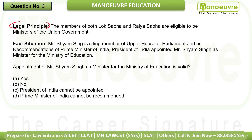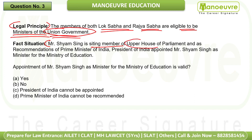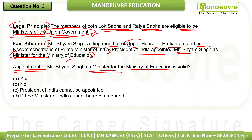Next question. Legal principle: members of both Lok Sabha and Rajya Sabha are eligible to be ministers of the Union Government. Fact situation: Mr. Sham Singh is a sitting member of the Upper House of Parliament, and on the recommendation of the Prime Minister, the President of India appointed him as Minister for the Ministry of Education. The question is whether this appointment is valid. Since the principle refers to ministers of the Union Government and ministry of education is a Union ministry, the appointment is valid. Option B is the correct answer.